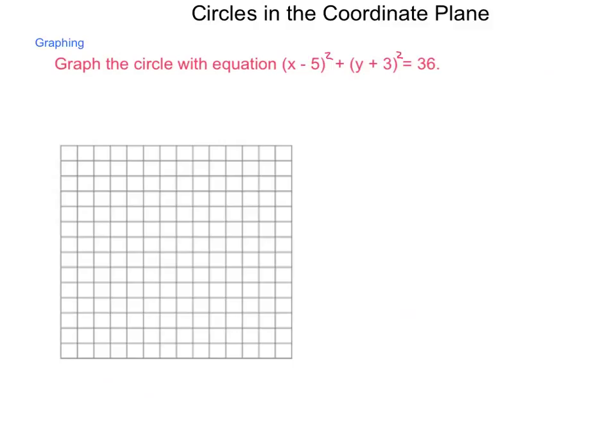First order of business is going to be to locate the center of this graph. Our center, according to the equation, is going to be whatever it takes to make the individual parts 0. So, what does it take to make x - 5 become 0? Well, that would be a positive 5. Next, what would it take to make y + 3 become 0? That would be a negative 3. So, we're going to have our center located at (5, -3).